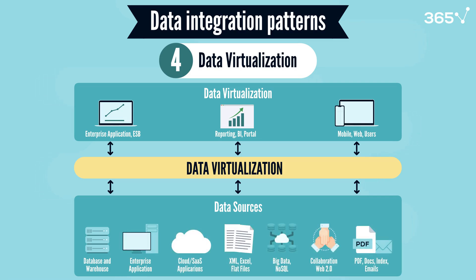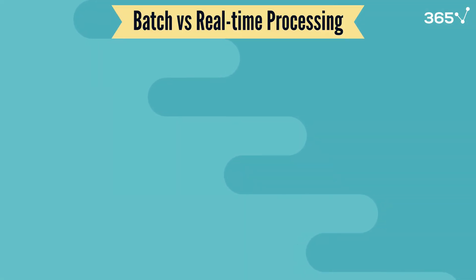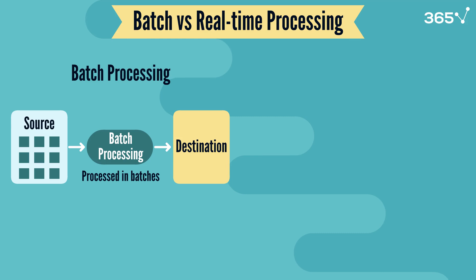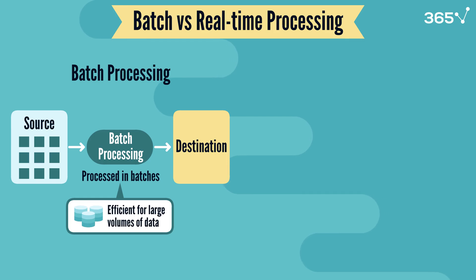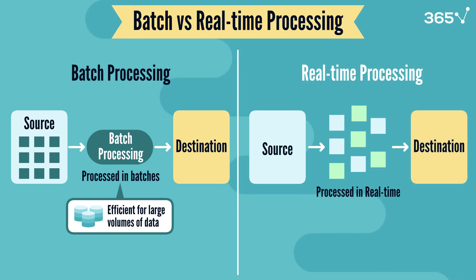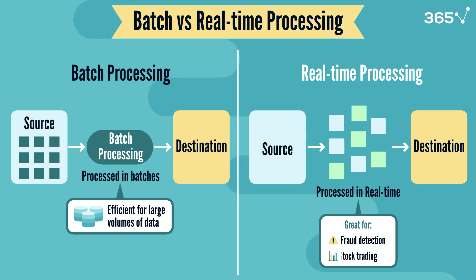It's important to note that data generally arrives in two distinct ways: in real-time or in batches. Batch processing is like doing laundry once a week, where data comes in batches and is ingested in periodic time slots. You gather all the data, process it together, and load the results — it's efficient for large volumes of data that don't need immediate updates. On the other hand, real-time processing is like washing dishes as you use them: data is processed instantly, enabling quick reactions. This is great for use cases like fraud detection or stock trading.